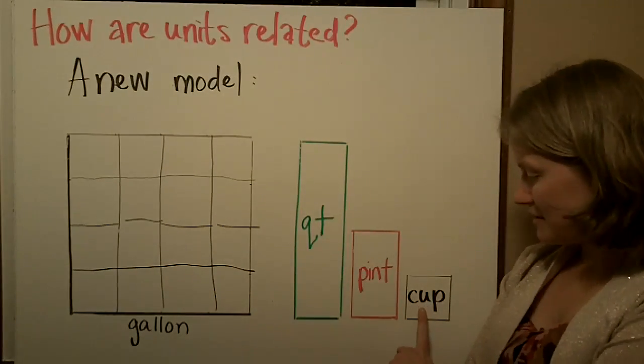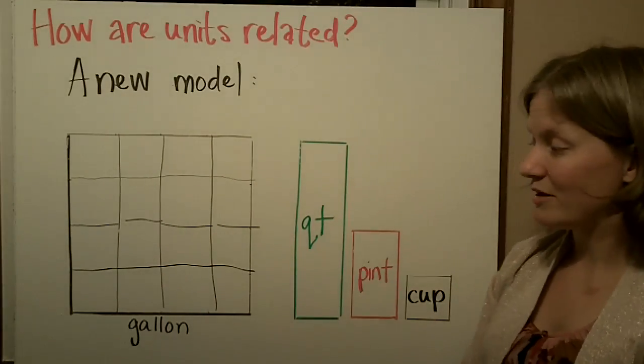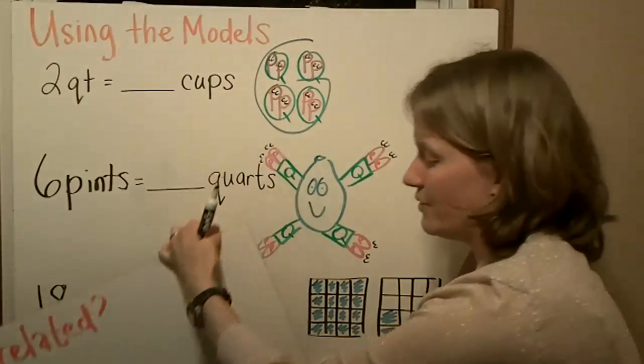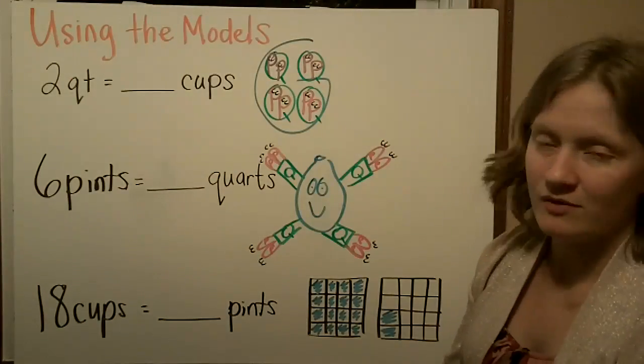If we know this is the size of a cup, it's easy to see there are sixteen cups in one gallon. We're going to use our three models to solve some problems of equivalent measurements.